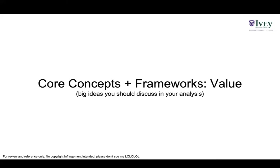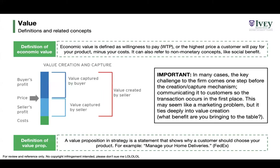Let's talk about some core concepts and frameworks. The most important thing regarding strategy is value. The definition of economic value is the difference between willingness to pay — theoretically the most you could charge a customer for your product — minus your cost of producing it. So the bottom is cost and the top is willingness to pay.